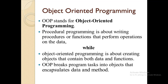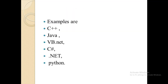In procedural programming, it's all about writing procedures or functions that perform operations on data. While in object-oriented programming, it's about creating objects that contain both data and functions. OOP breaks program tasks into objects that encapsulate data and methods. Examples of object-oriented programming are C++, Java, VB.NET, C#, .NET, and Python.